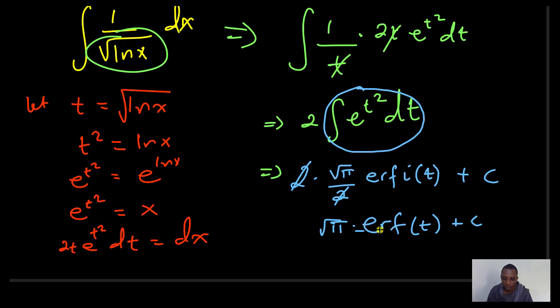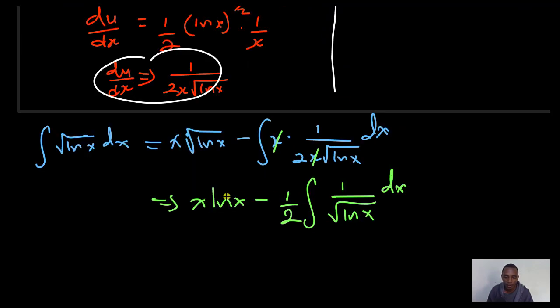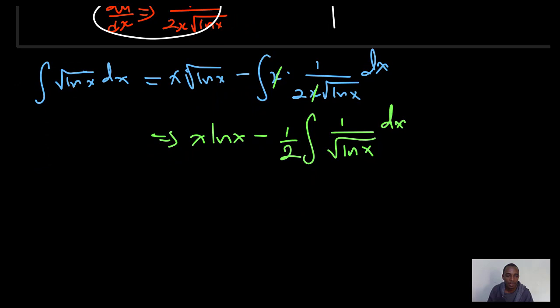What am I going to do here? This t here, I don't like it. I'll just substitute back for ln x. This is going to be the square root of pi times the imaginary error function. Instead of t, I'll have the square root of ln x, plus a constant. I just bring that all back to the previous page here and write my final solution.